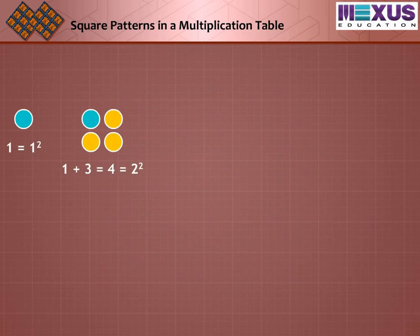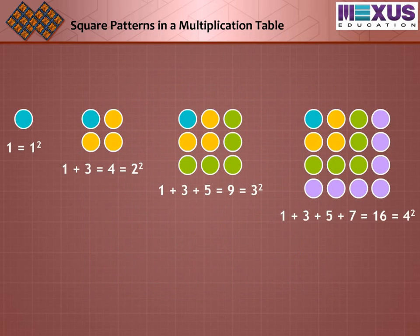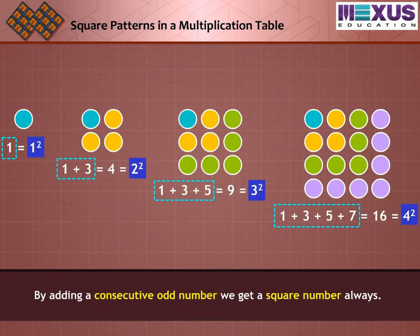Let us see another number pattern related to square numbers. Add the first two consecutive odd numbers. Now, add first three consecutive odd numbers. Similarly, add another consecutive odd number. We see a number pattern here which shows a relationship between square numbers and odd numbers. That is, by adding consecutive odd numbers, we get a square number always.